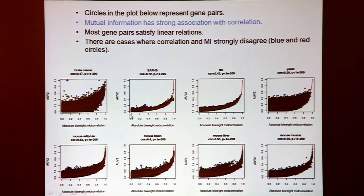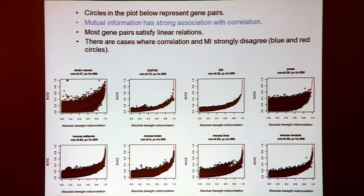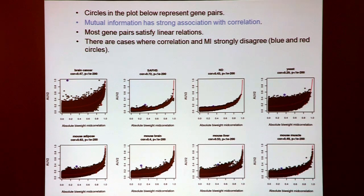With a thousand subjects in the SA FHS dataset, there is sufficient sample size to estimate dependence measures accurately. Interestingly, there is a very close — though curvilinear — monotonic relationship between mutual information and the absolute correlation. This means both measures rank gene pairings very similarly, suggesting highly non-linear relationships are rare when it comes to gene pairings.